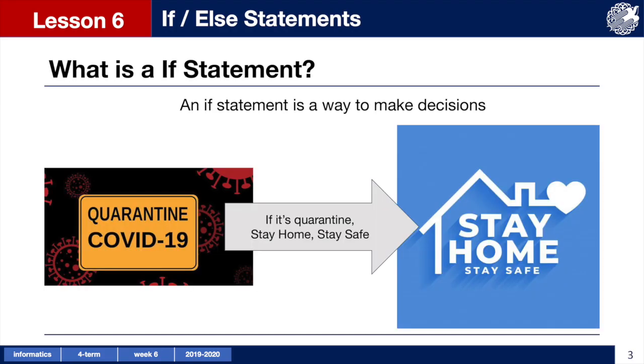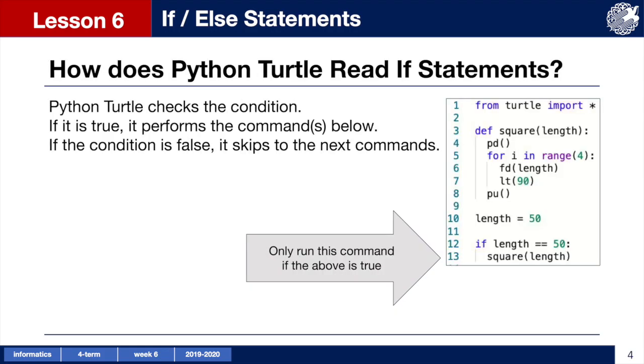An if statement is a structure we use to tell the turtle to make decisions based on conditions in our code. We use if statements all the time in our daily lives, such as if it's quarantine, stay home, stay safe. We only complete the command of staying home if the condition that it's quarantine is true. When we give the turtle an if statement, it goes through a similar process.